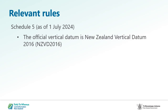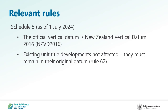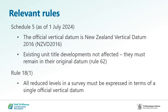This does not affect existing unit title developments — Rule 62 confirms that they must remain in the original datum. Rule 18.1 isn't changing, but it plays a significant role in how CSDs must comply after July 1st. It specifies that all reduced levels in a survey must be expressed in terms of a single official vertical datum.